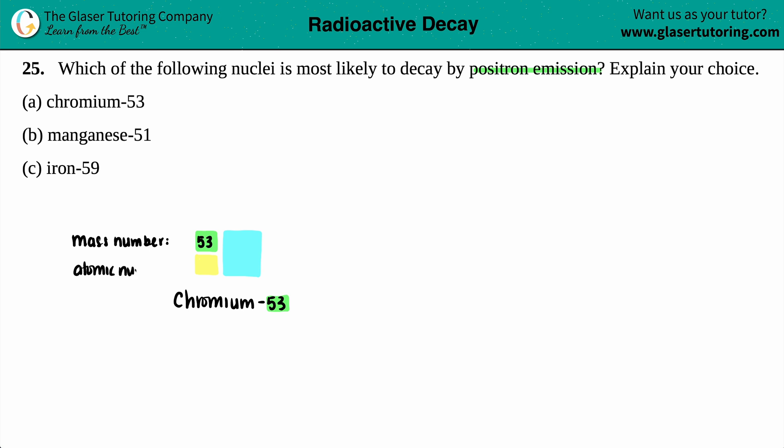And then the bottom number represents the atomic number. Now the atomic number is the special number that every element has unique, so we got to look on the periodic table, find out where chromium is and find out its atomic number because that number will never change. Now chromium is Cr on the periodic table and it's got a number 24.